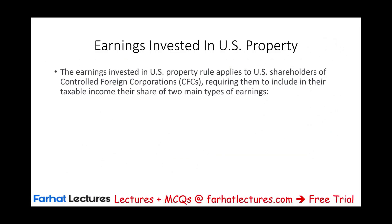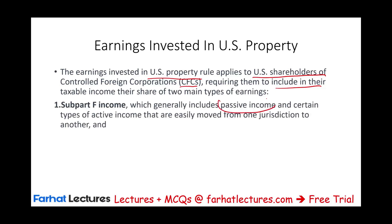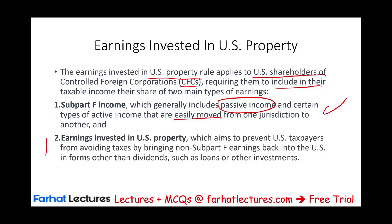The earnings invested in U.S. property rule applies to U.S. shareholders of controlled foreign corporations (CFCs), requiring them to include in their taxable income their share of two main types of earnings. If the CFC earns passive income and certain types of income that are easily moved, you are taxed on that. Additionally, you are taxed on earnings invested in U.S. property, which aims to prevent U.S. taxpayers from avoiding taxes by bringing non-subpart F earnings back to the U.S.